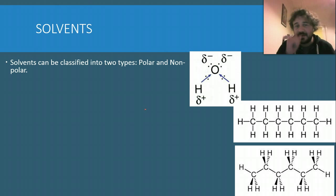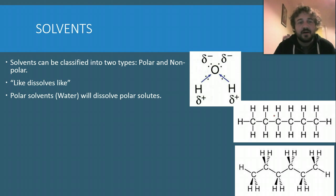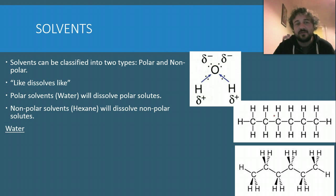Solvents. We're going to talk about two here. They can be classified into two types: polar and non-polar. Water, as we've mentioned ad nauseum and we'll probably mention it again, is polar. Over here, hopefully you can see straight away why it's not, but this is a non-polar one, and we call this hexane. Basically, like dissolves like. So a polar solvent will dissolve a polar solute. A non-polar solvent will dissolve a non-polar solute.